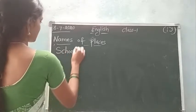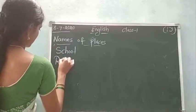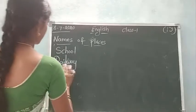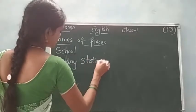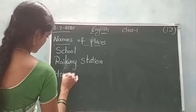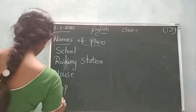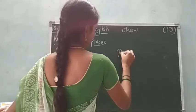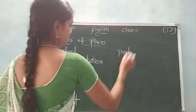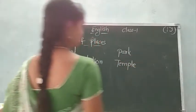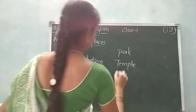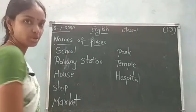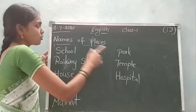I will write on the board — all of you see and say after me. Shop, S-H-O-P. Market, M-A-R-K-E-T. Park, P-A-R-K. Temple, T-E-M-P-L-E. And hospital. These are some places, children. All of you see and say after me. I will read the spellings. Names of places — these are nouns.